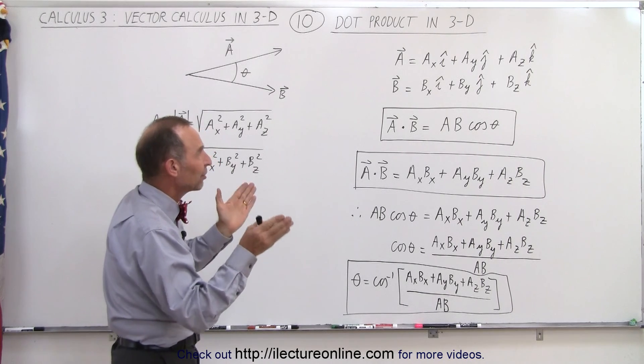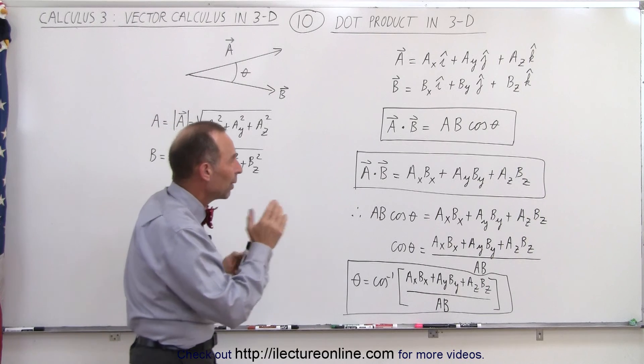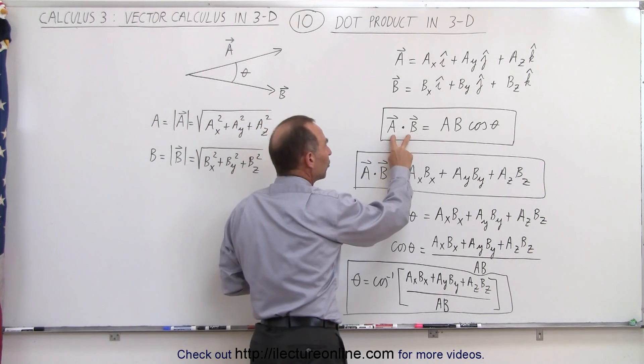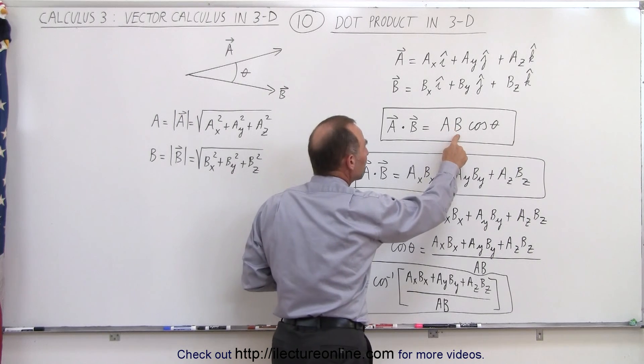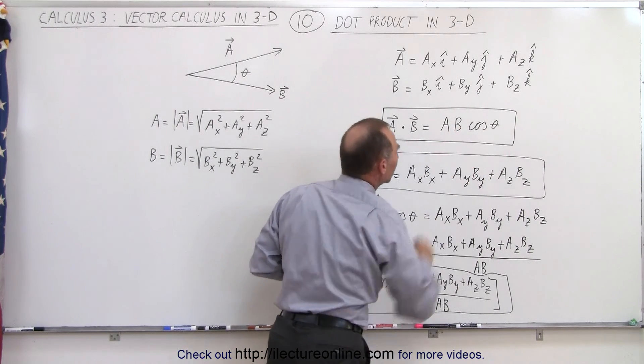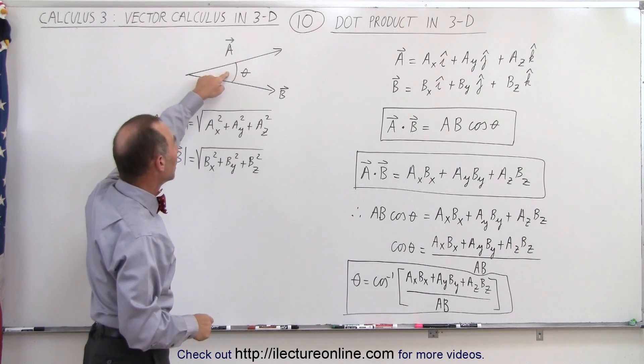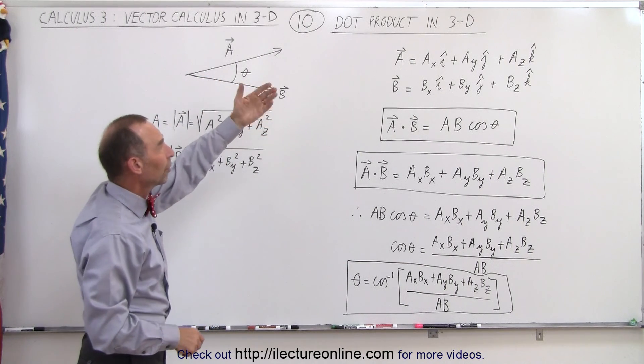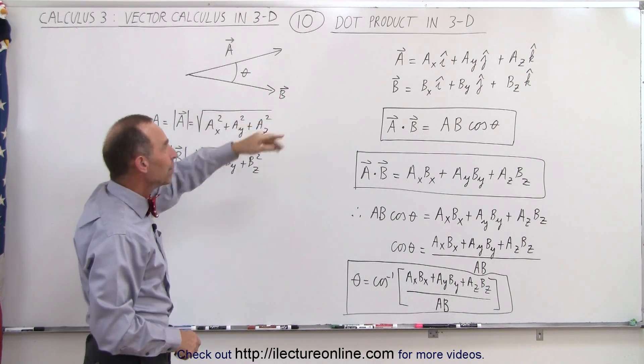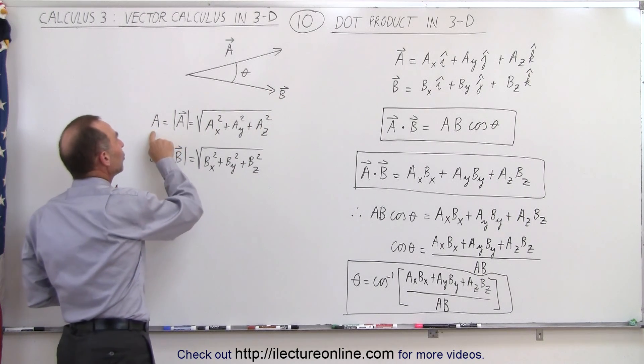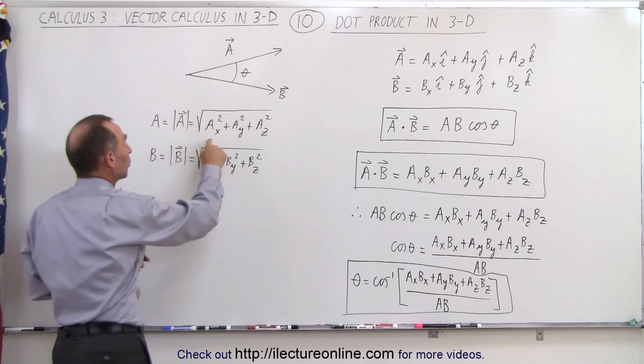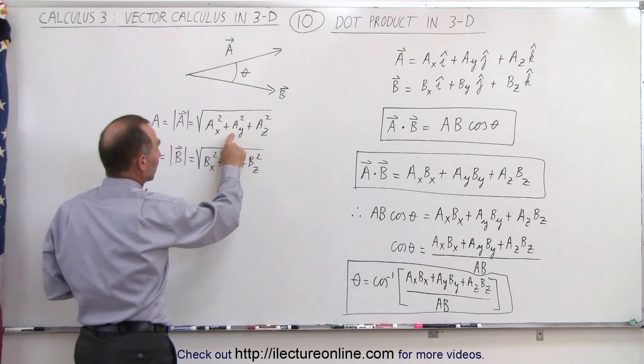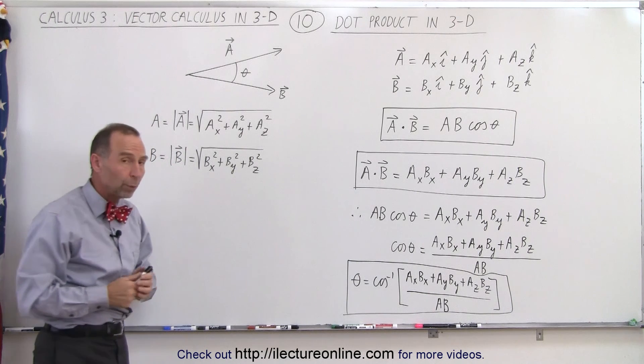So what do we do when we have a dot product? When we have a dot product between two vectors, we multiply the magnitude of A times the magnitude of B times the cosine of the angle between them. Now, if the angle between them is known, and we know the components of A and B, we can then find the magnitude of A by using the Pythagorean Theorem in three dimensions. It's the square root of the x component squared plus the y component squared plus the z component squared.